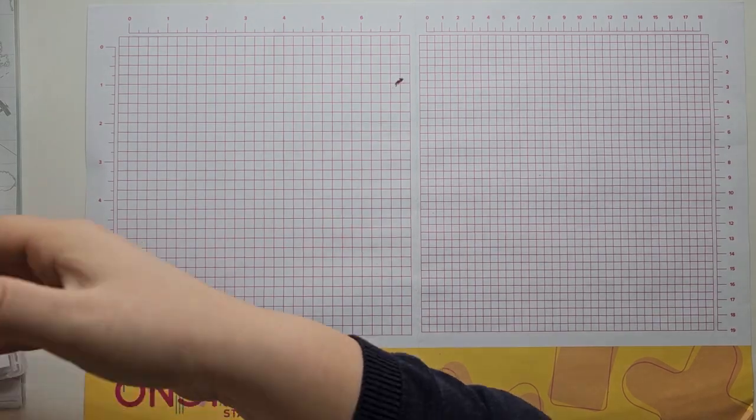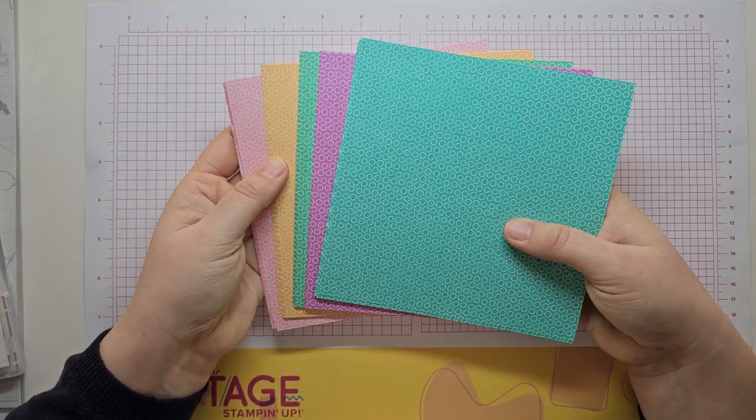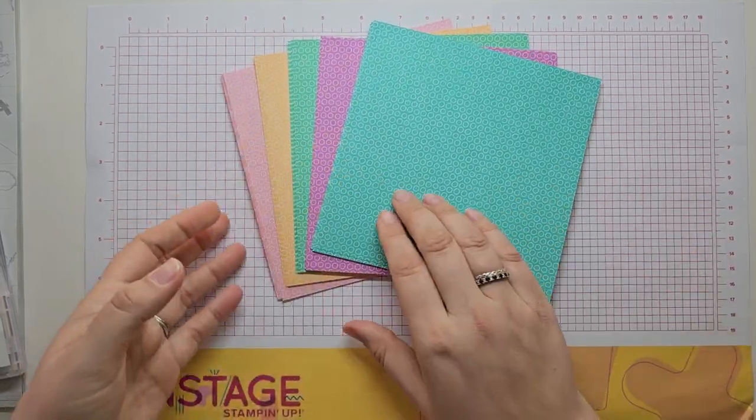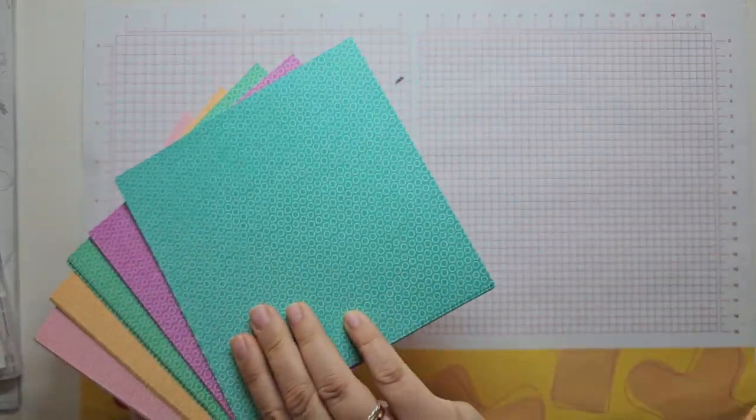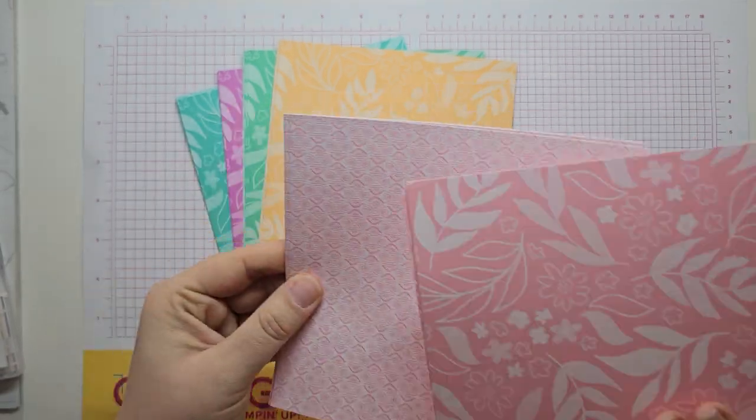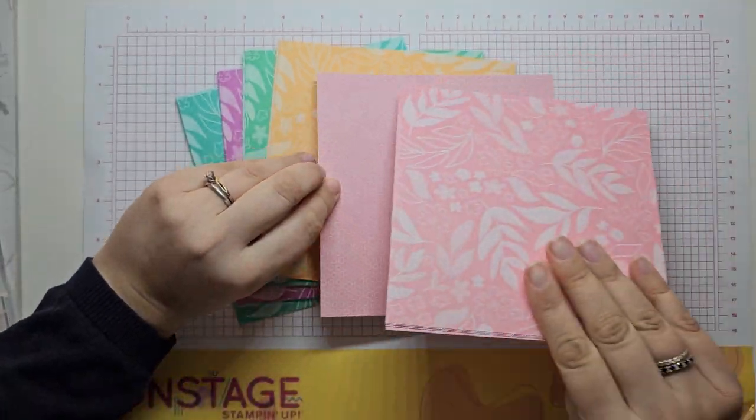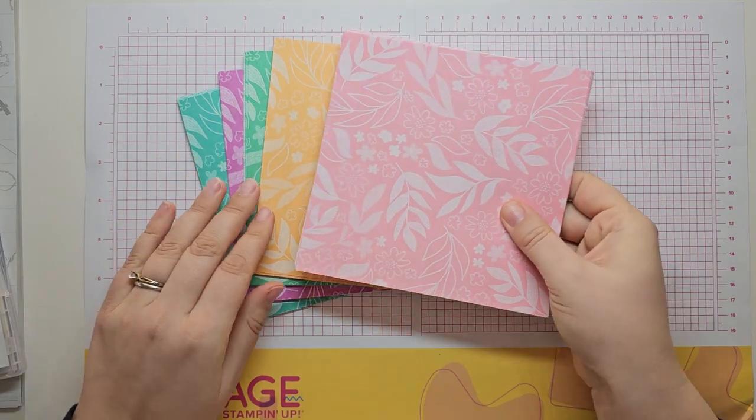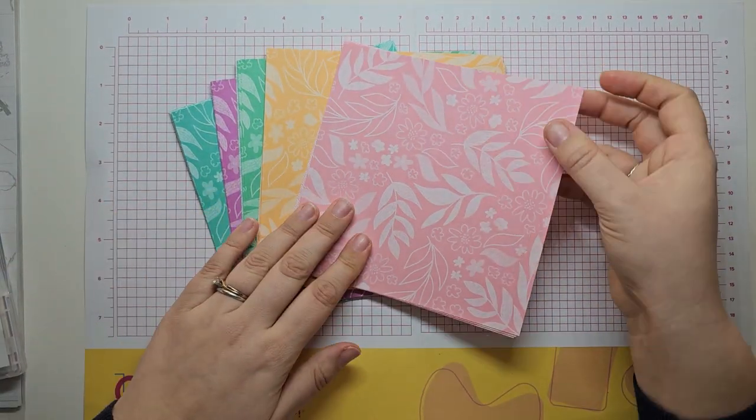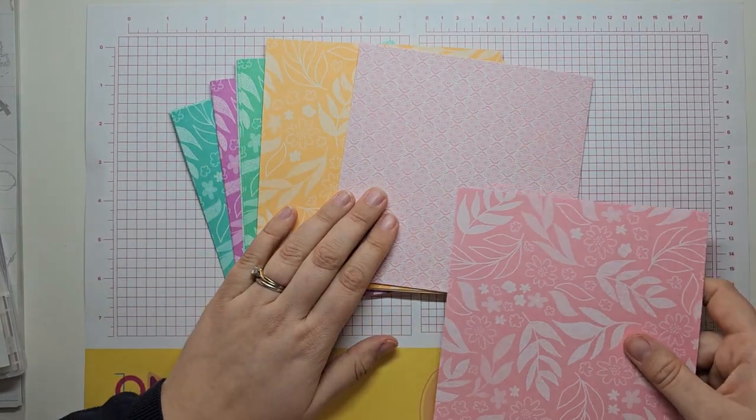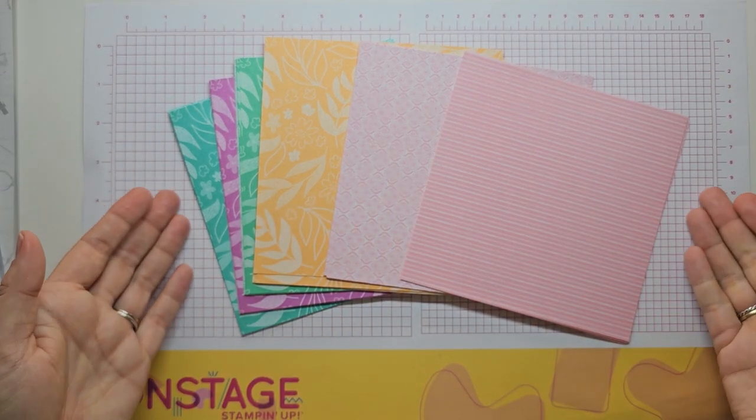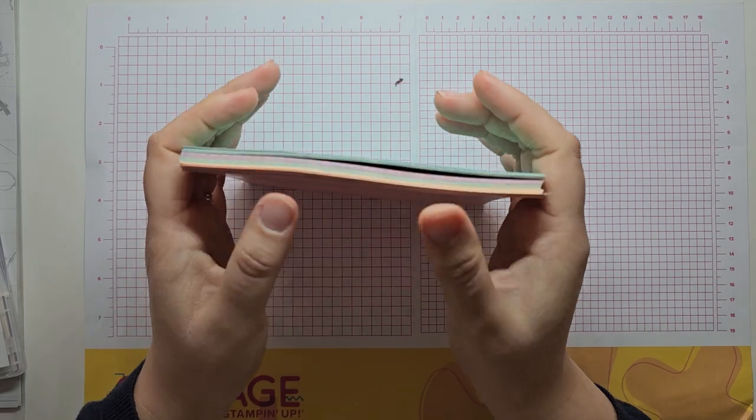Lastly for my in colour products I have got the in colour designer series paper in all five colours. There are four different designs. You've got the spots, flowers, and then the flowers and leaves. And then we've got the mosaic and the stripes. This colour pack will be available in the new in colours.